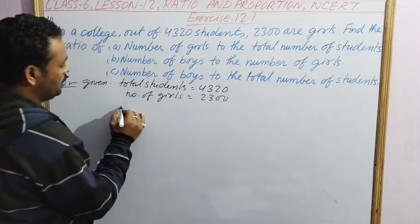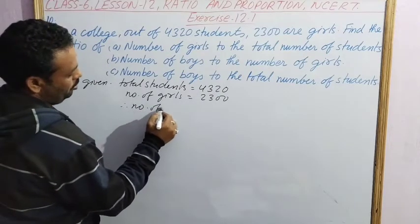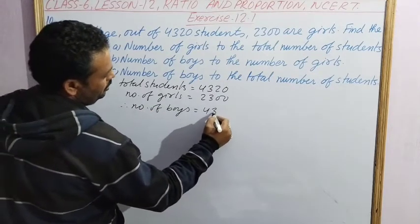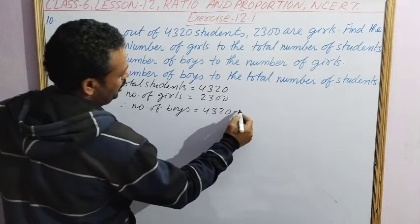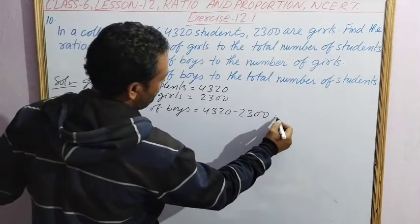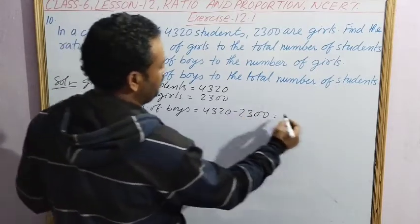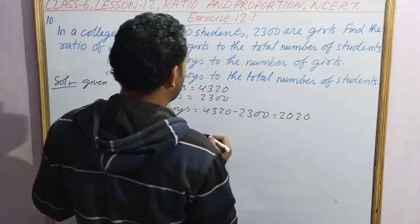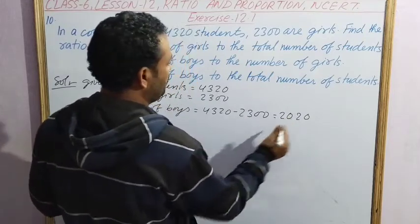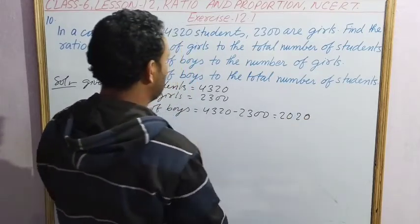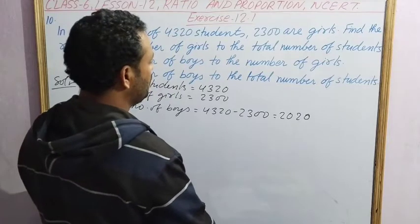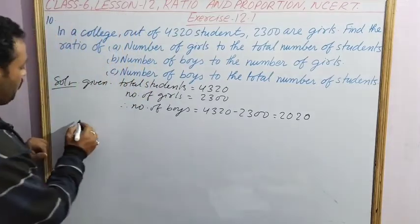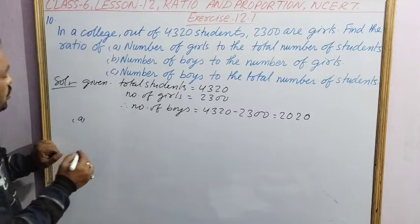Number of boys will be total students minus number of girls: 4320 minus 2300 equals 2020. So number of boys is 2020.